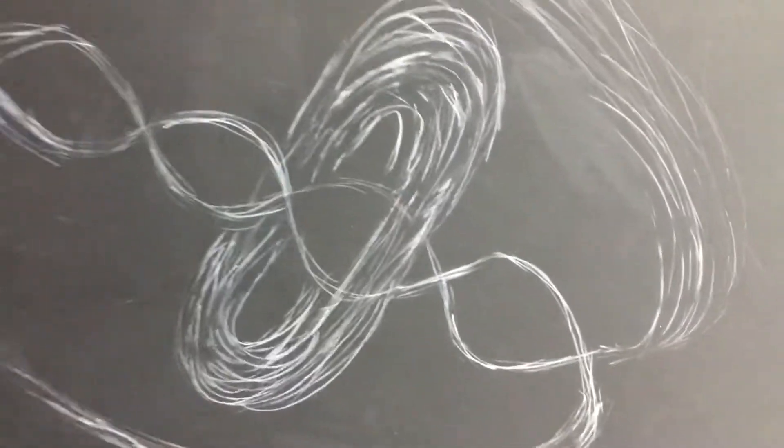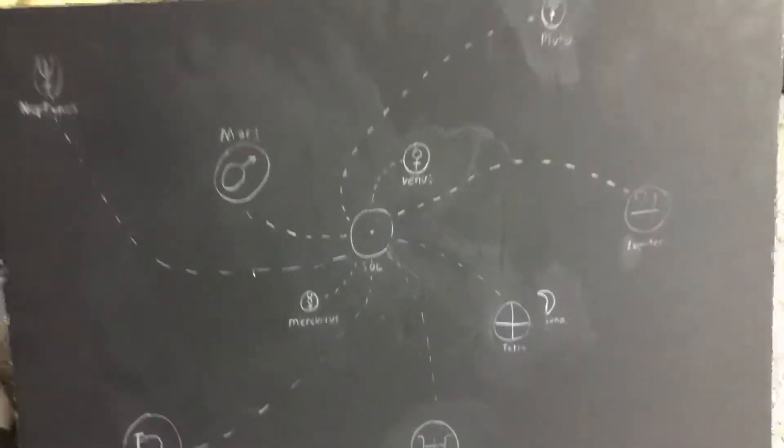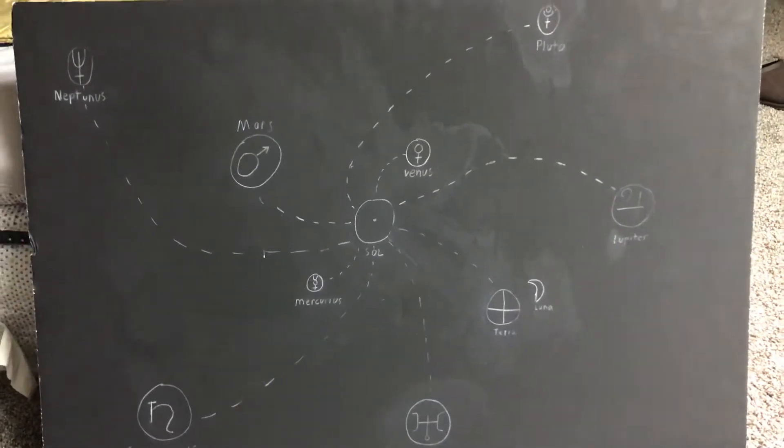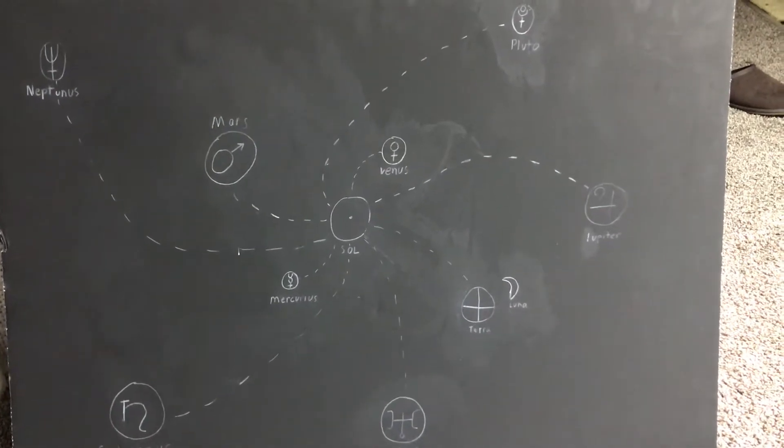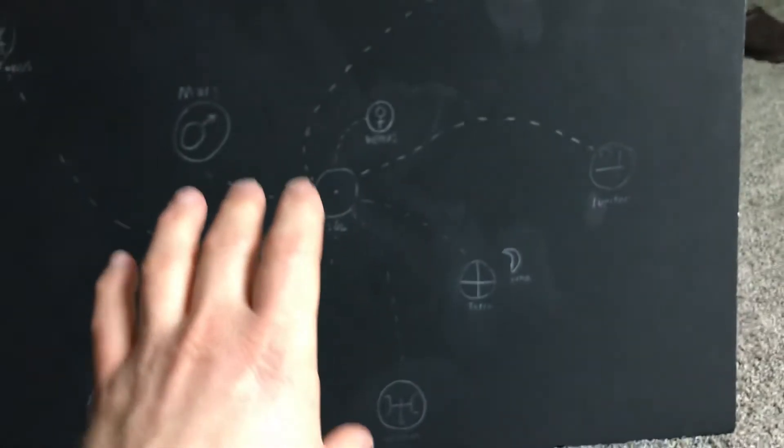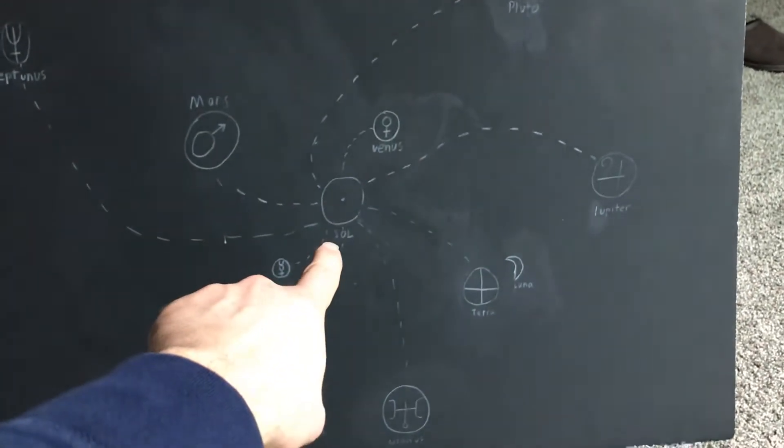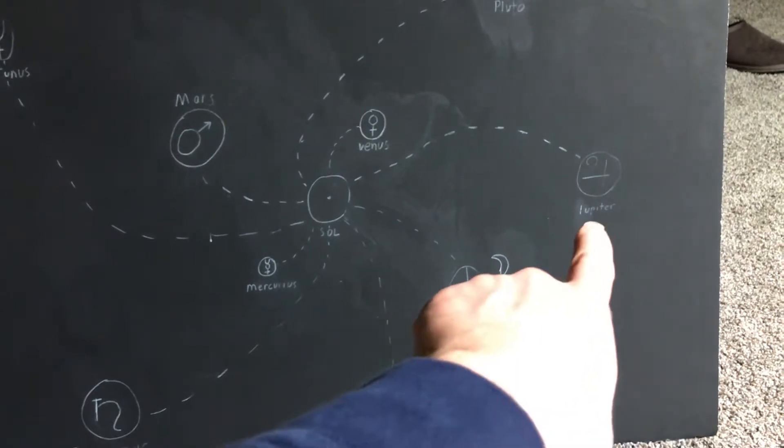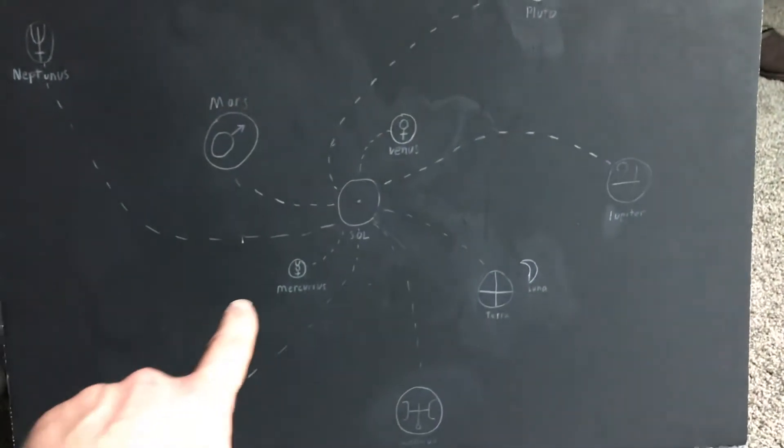Anyway, the reason we're discussing this is the next board we have. That is our solar system. Now this isn't exact, I said this before in previous videos, but this is a general idea, the general layout of what we have. We have the sun in the middle, Sol. Terra is the earth. Luna is the moon. Jupiter, Venus, Mars, etc.